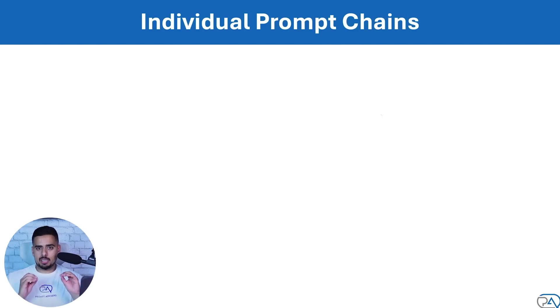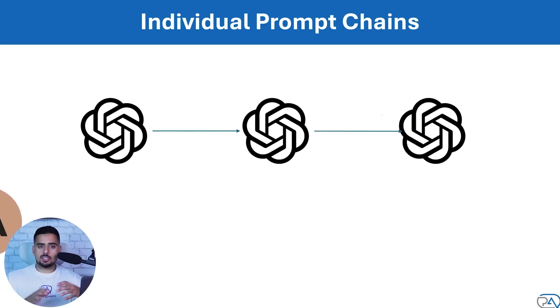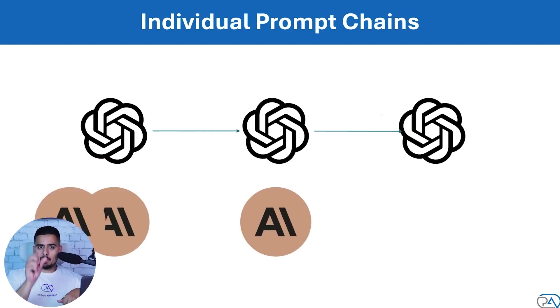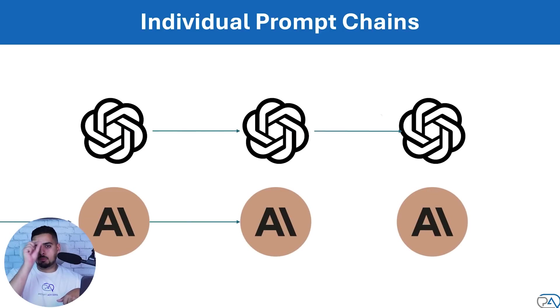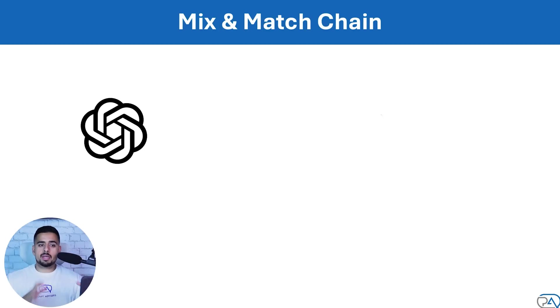With individual prompt chains, you take the same LLM, break it into different steps like we just mentioned, and have one LLM step feed into the next. For the mix and match chain, it's one of my favorites because it's very powerful if you truly understand which large language model to use for which type of task.